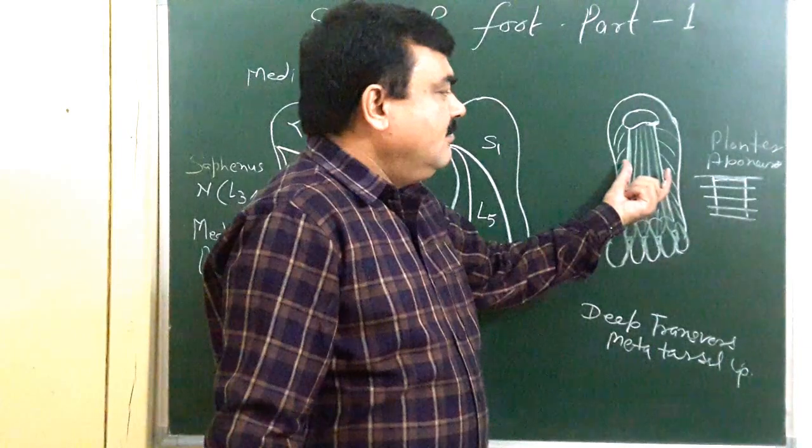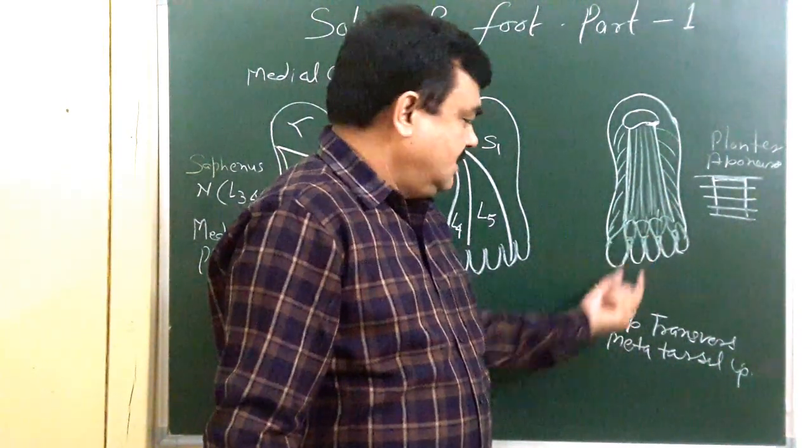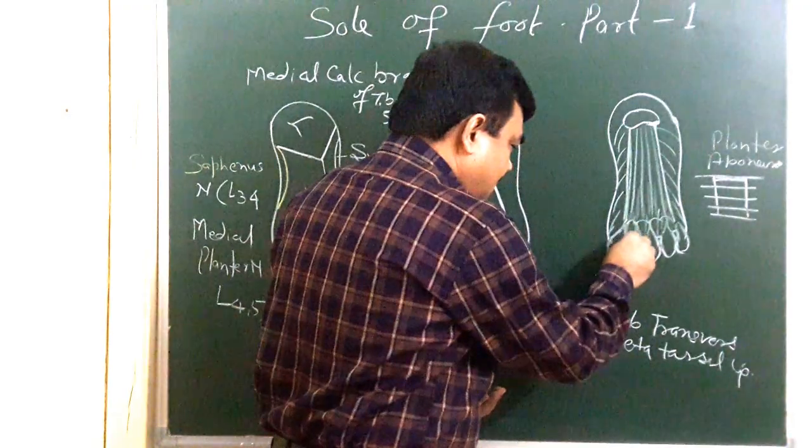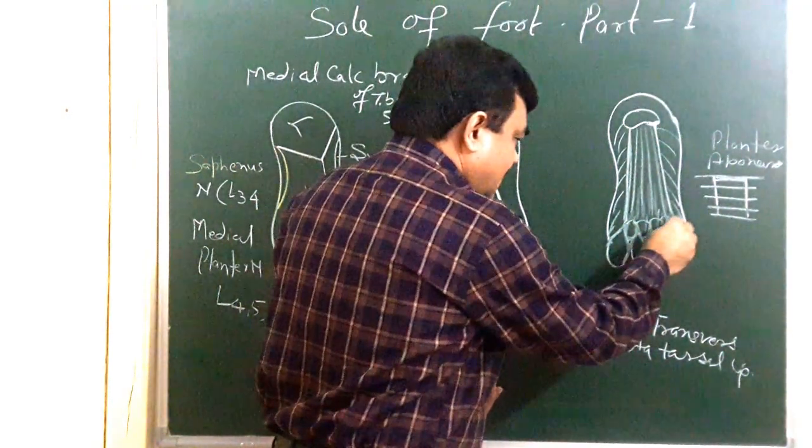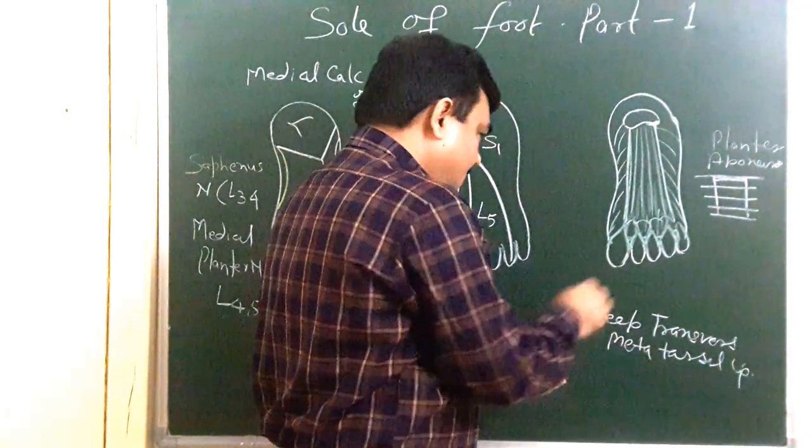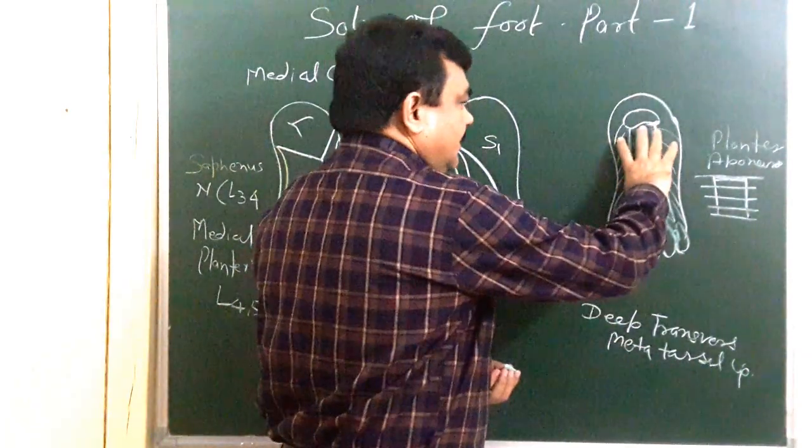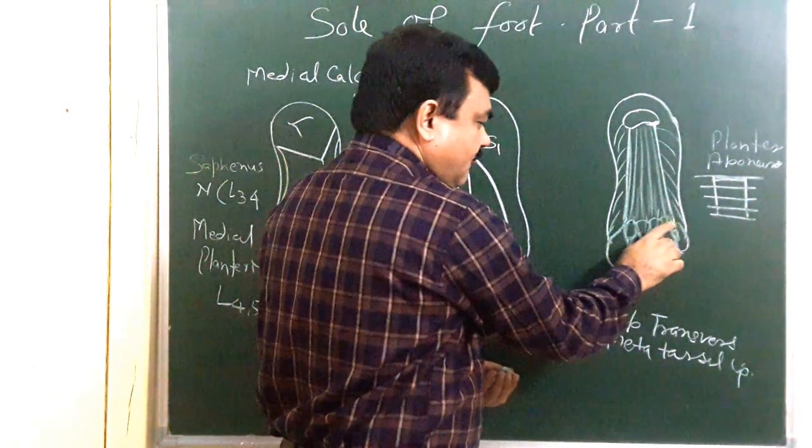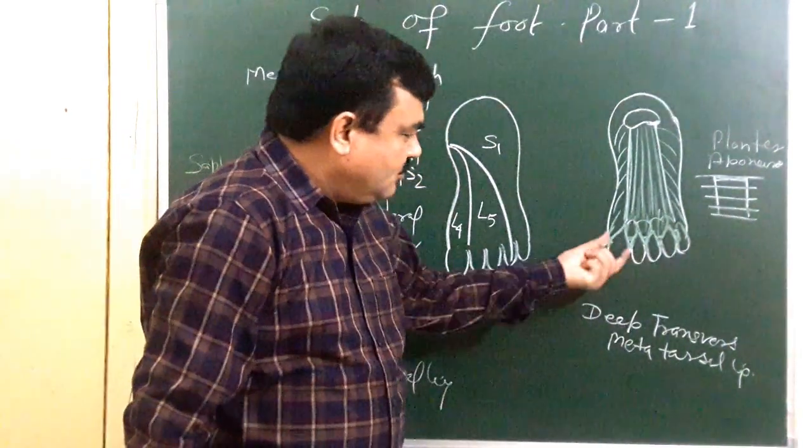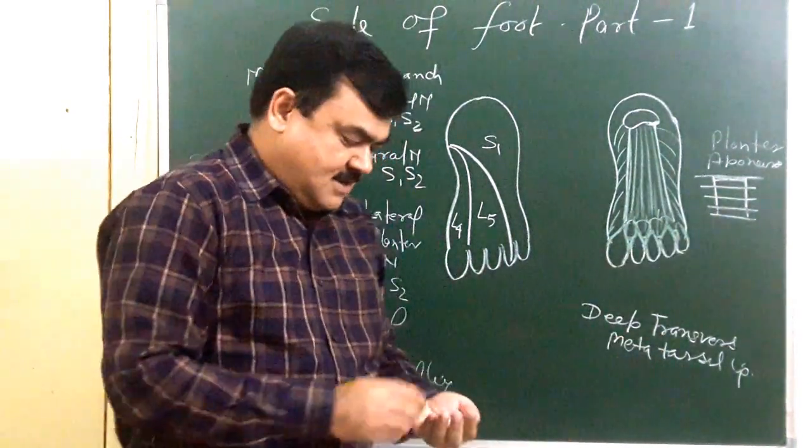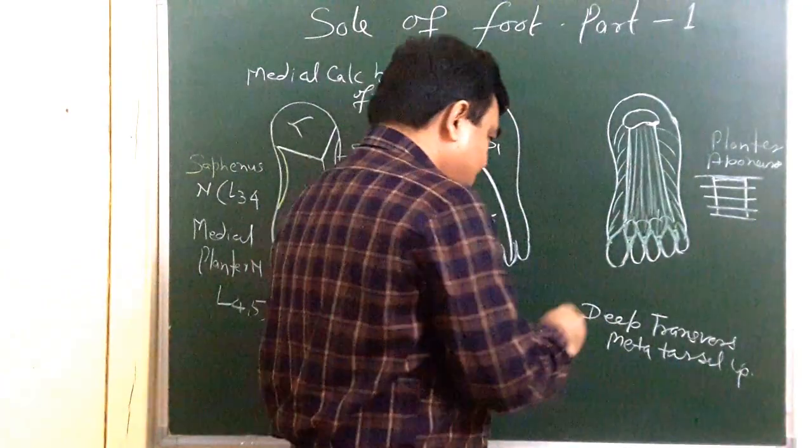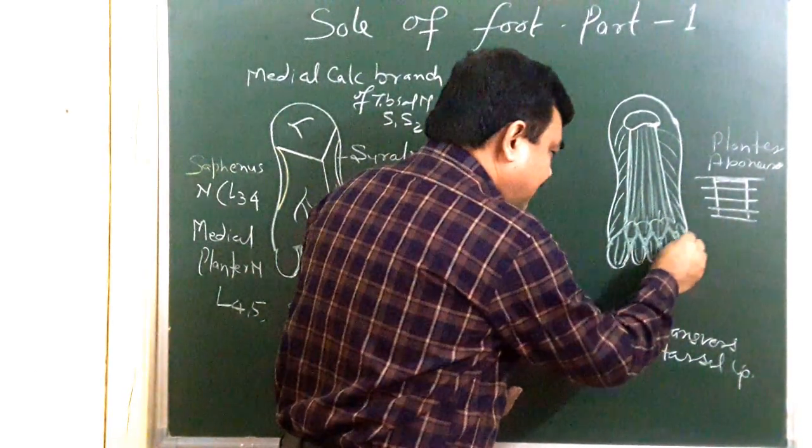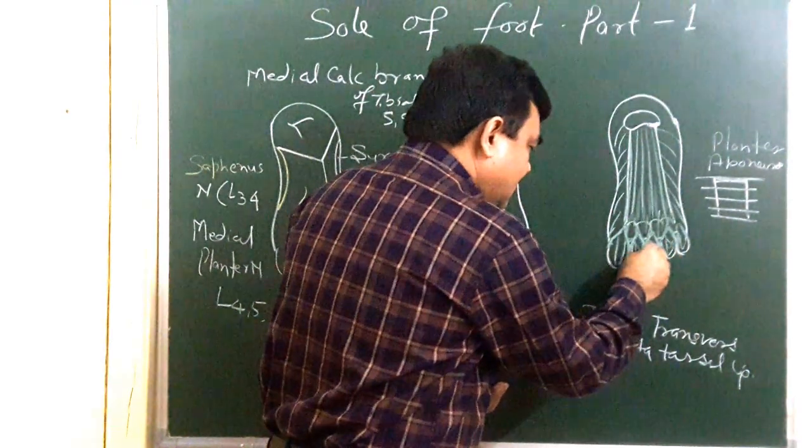One modification is here, plantar aponeurosis. Deep transverse metatarsal ligament and the modification is here. Here are slips which are attached to the base. Here is the apex of the fascia. This plantar aponeurosis has apex and base. And these are five processes and each process divided into two slips medial and lateral. And in between two slips there is a fibrous flexor sheath.